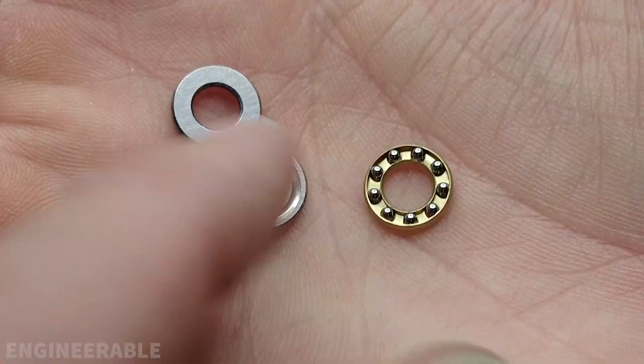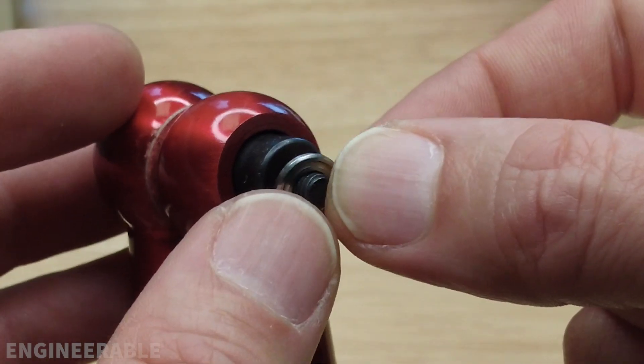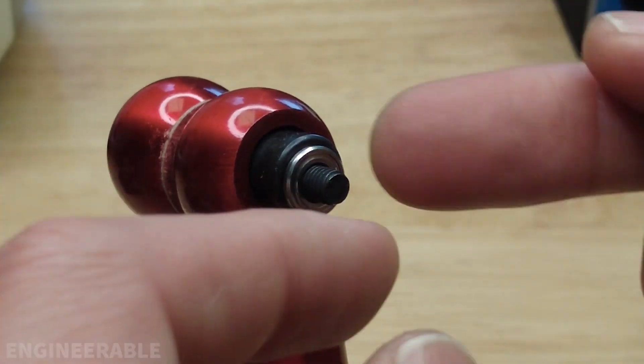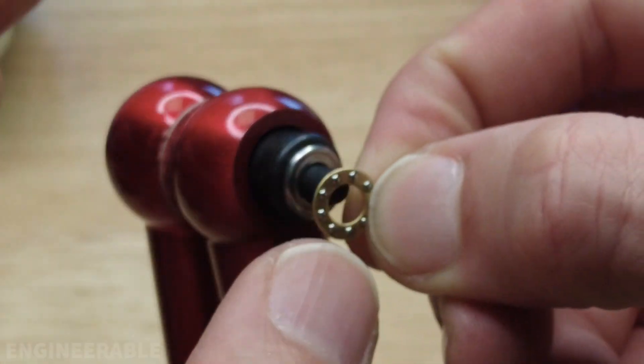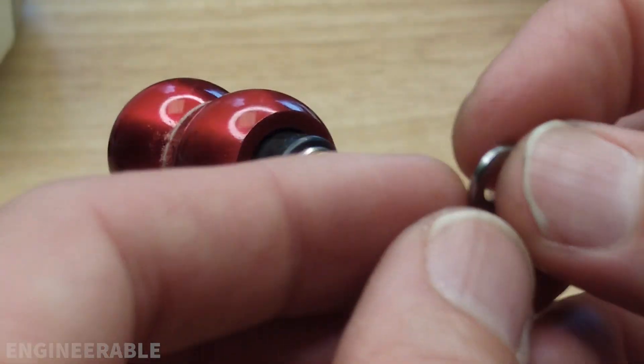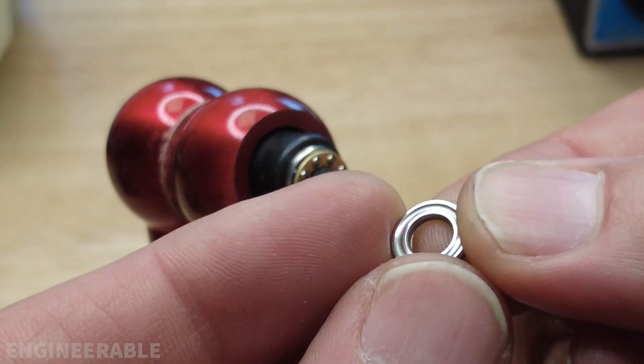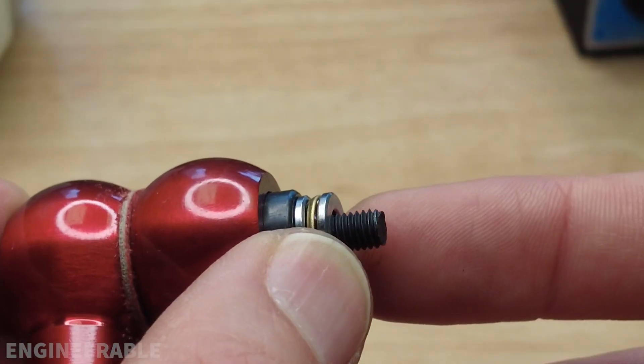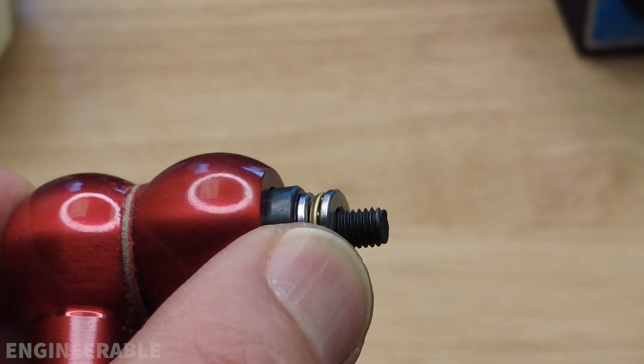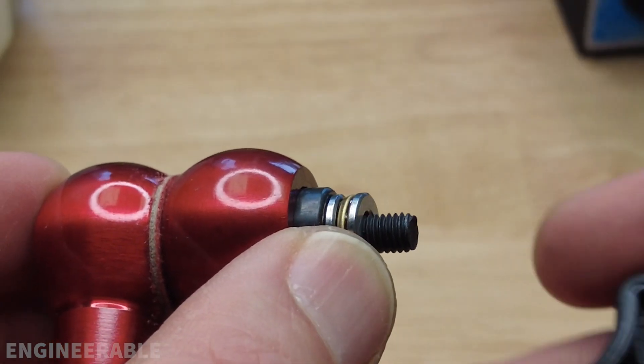So take that outer race, put it on, make sure that the groove is facing the ball bearings. Put the ball bearings on, take the other outer race, the groove should be facing the ball bearings again. And this one has a lot more thread than the mini version, so I'm confident that this works fine without doing any machining.